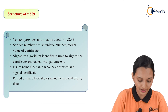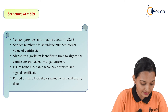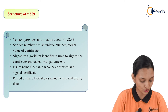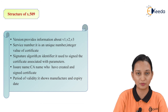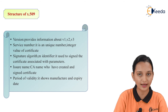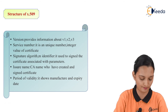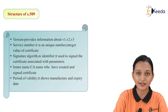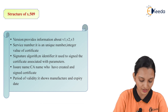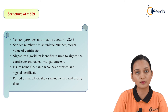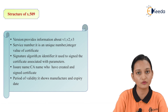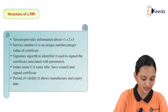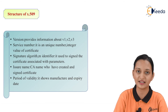Next is issuer name — the CA name, meaning the Certificate Authority: the particular organization or person who has created and signed the certificate; their name should be there. Next one is period of validity — it shows the manufacture and expiry date. We have already seen 'not before' and 'not after', which is nothing but the date range within which the certificate will be valid, and that is very similar to a manufacture date and expiry date.